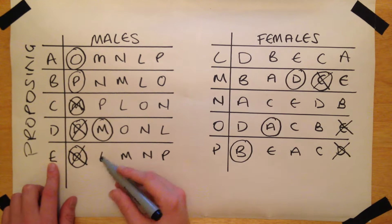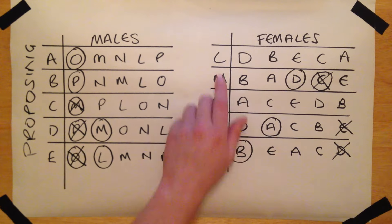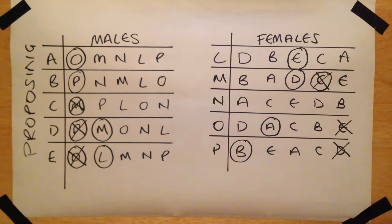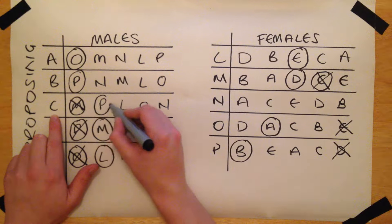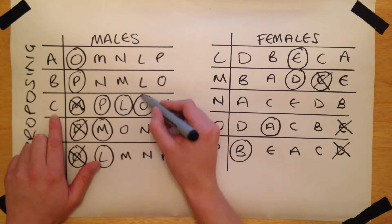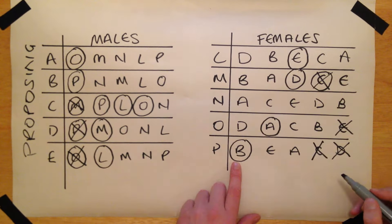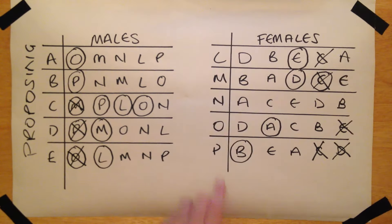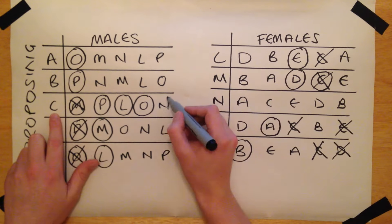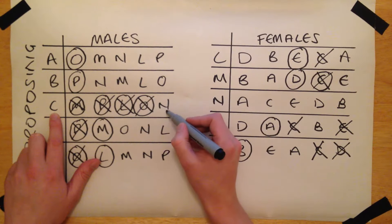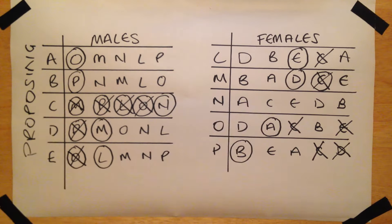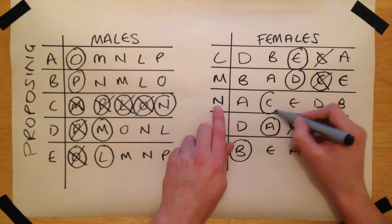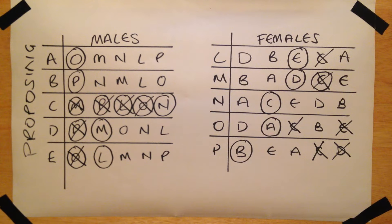E proposes to L, and as she has not previously received an offer, she accepts. C is now the only male who has yet to find a partner after being dumped by M. He proposes to P, then L, then O, and is turned down by all three, as they have better options. Finally, he proposes to N, who accepts, as she has not received any offers thus far.